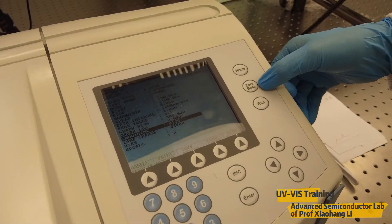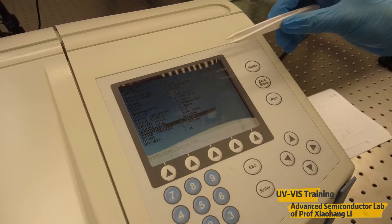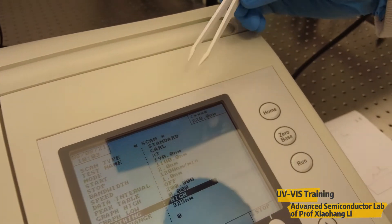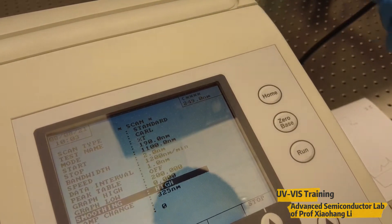By doing this kind of setting we can start to measure the baseline. By pressing the zero base we can measure the baseline. As you can see it will start to measure the baseline from 190 nanometer up to 1100 nanometer. Let's wait.